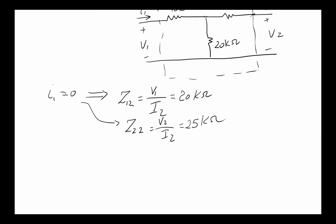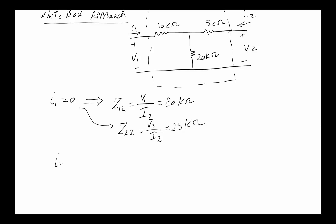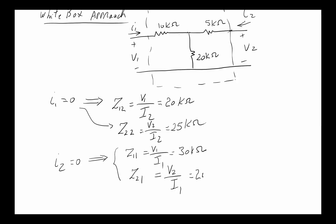For the remaining parameters, set I2 = 0 (open port 2). Then Z11 = V1/I1: all of I1 flows through the network and all the current passes through the resistors in series, giving Z11 = 30 kΩ. Z21 = V2/I1 works out to 20 kΩ, using the voltage divider relationship across the 20 kΩ resistor.